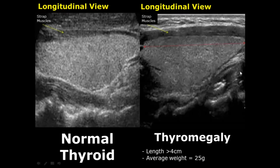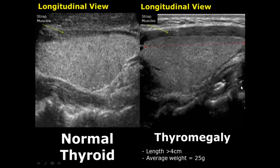The average weight of the thyroid gland is around 25 grams. Another term commonly used for thyromegaly is goiter, which is also the abnormal enlargement of the thyroid gland. This can be due to many reasons such as nodular hyperplasia, cancer, or thyroiditis.